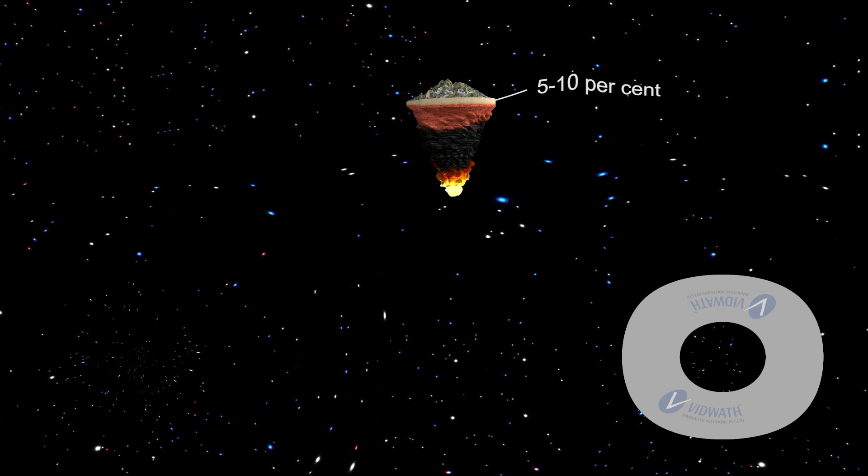Crust forms about 5 to 10% of the Earth's volume. Mohorovičić or moho discontinuity forms the boundary between crust and asthenosphere. Asthenosphere is a part of the mantle. The outer covering of the crust is of sedimentary material.